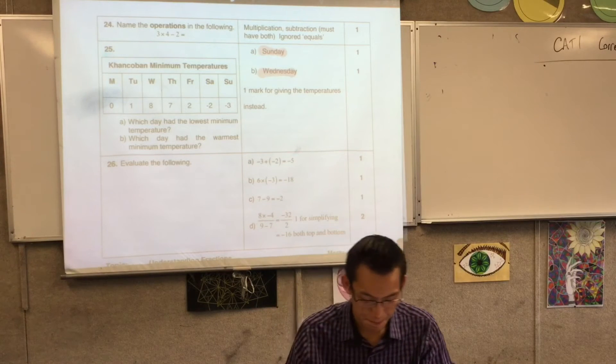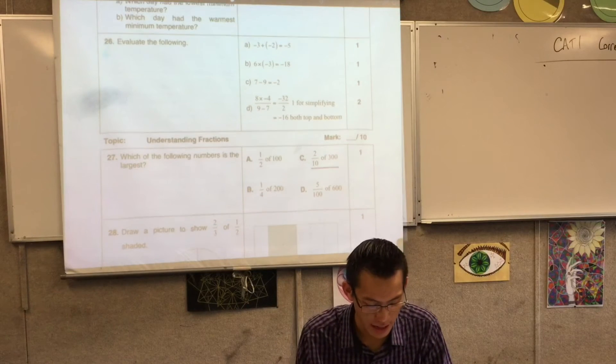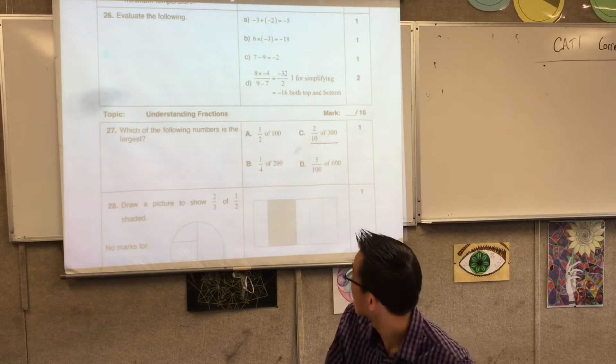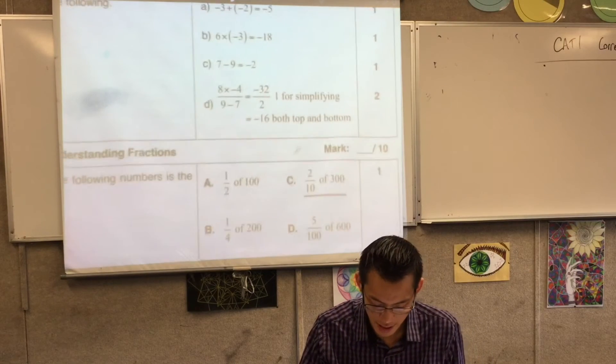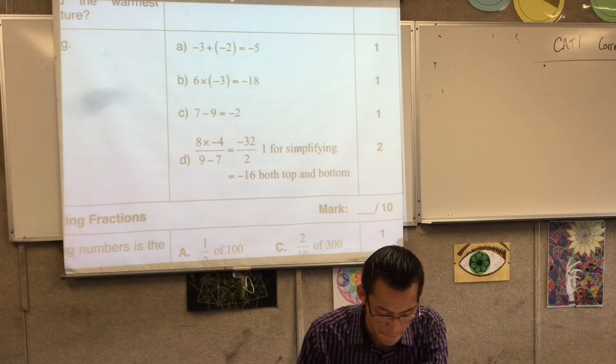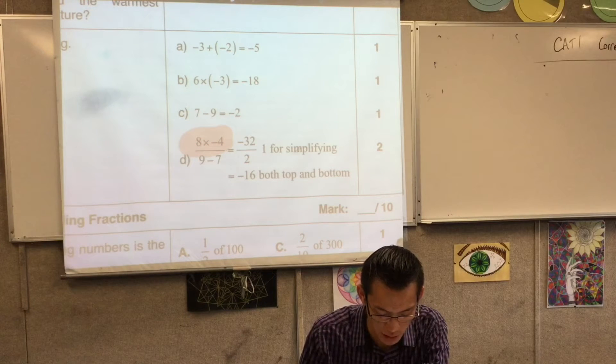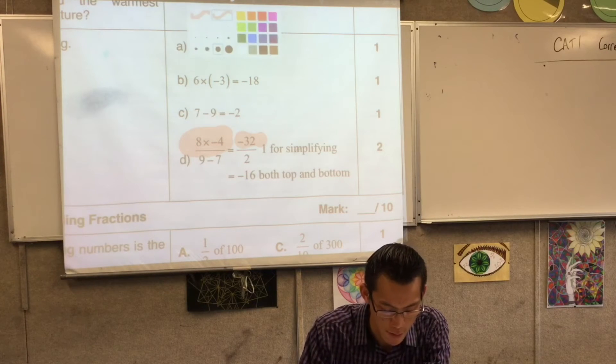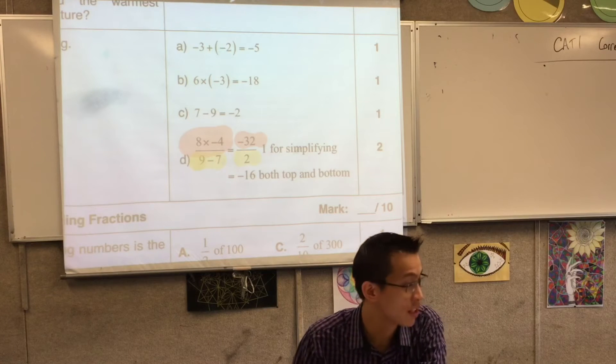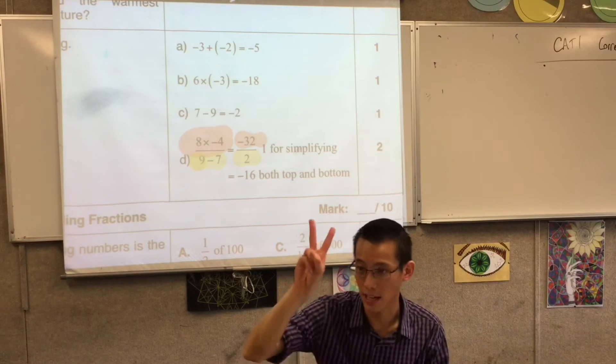Last question under integers, and I'll just let you have a look at that working there. I hope it's reasonably clear. You can see this last question, if you're wondering where were the two marks, most people approached it like this: you multiply across on the top which gives you negative 32, and then you subtract these on the bottom which gives you two. But that gives you a fraction you could simplify, so that's where that second mark was from.